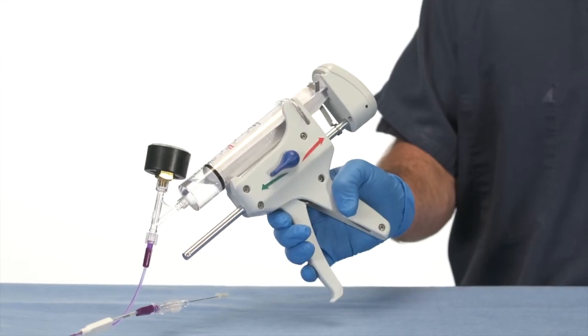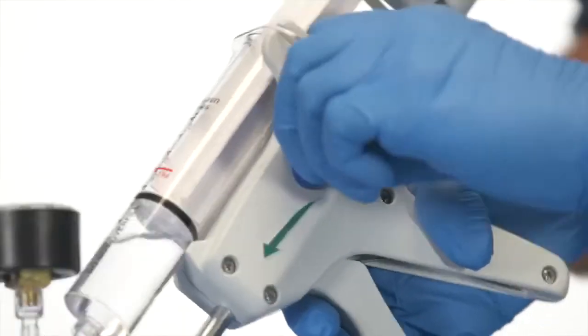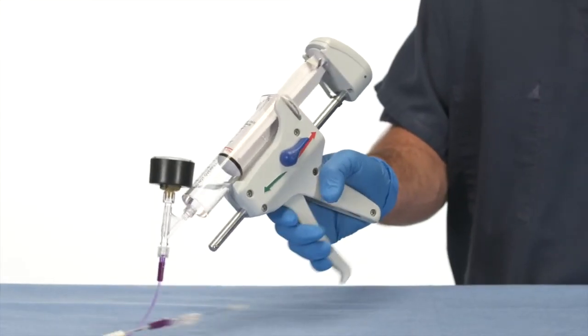Turn the lever to the red arrow deflate position. Pump the handle until it stops deflating.